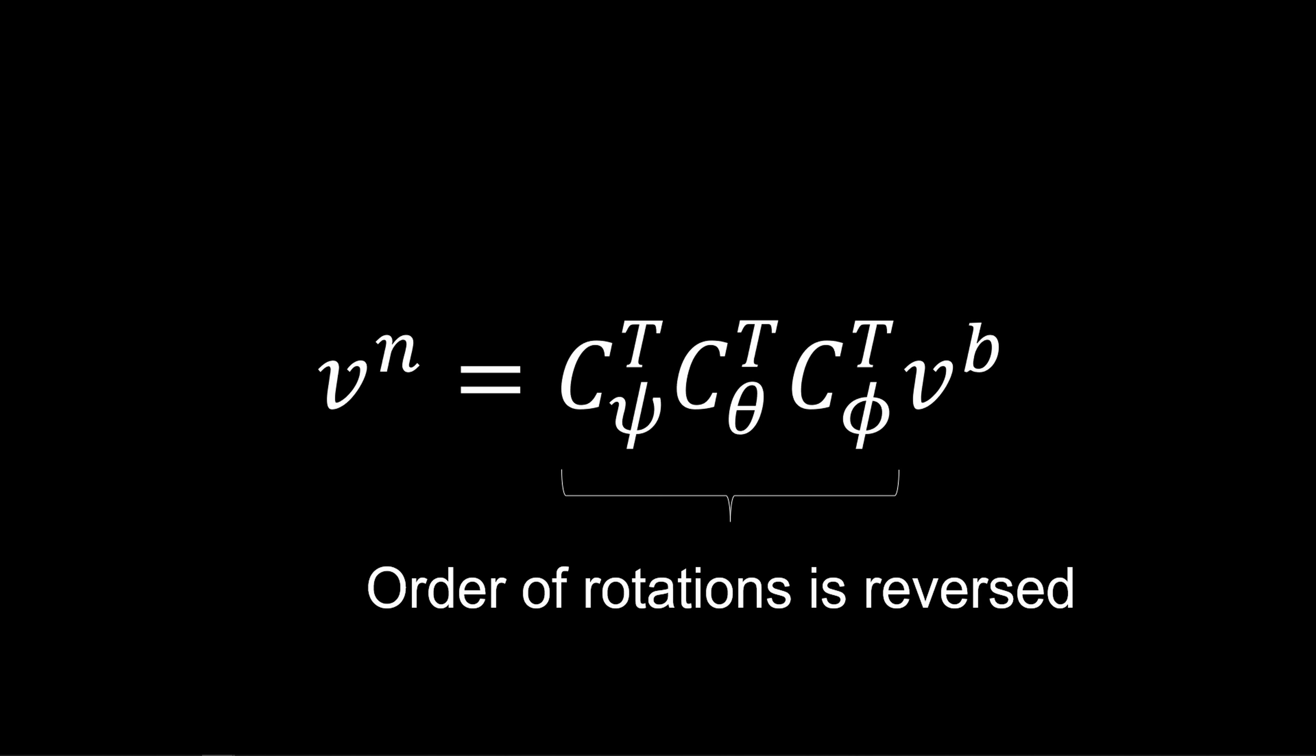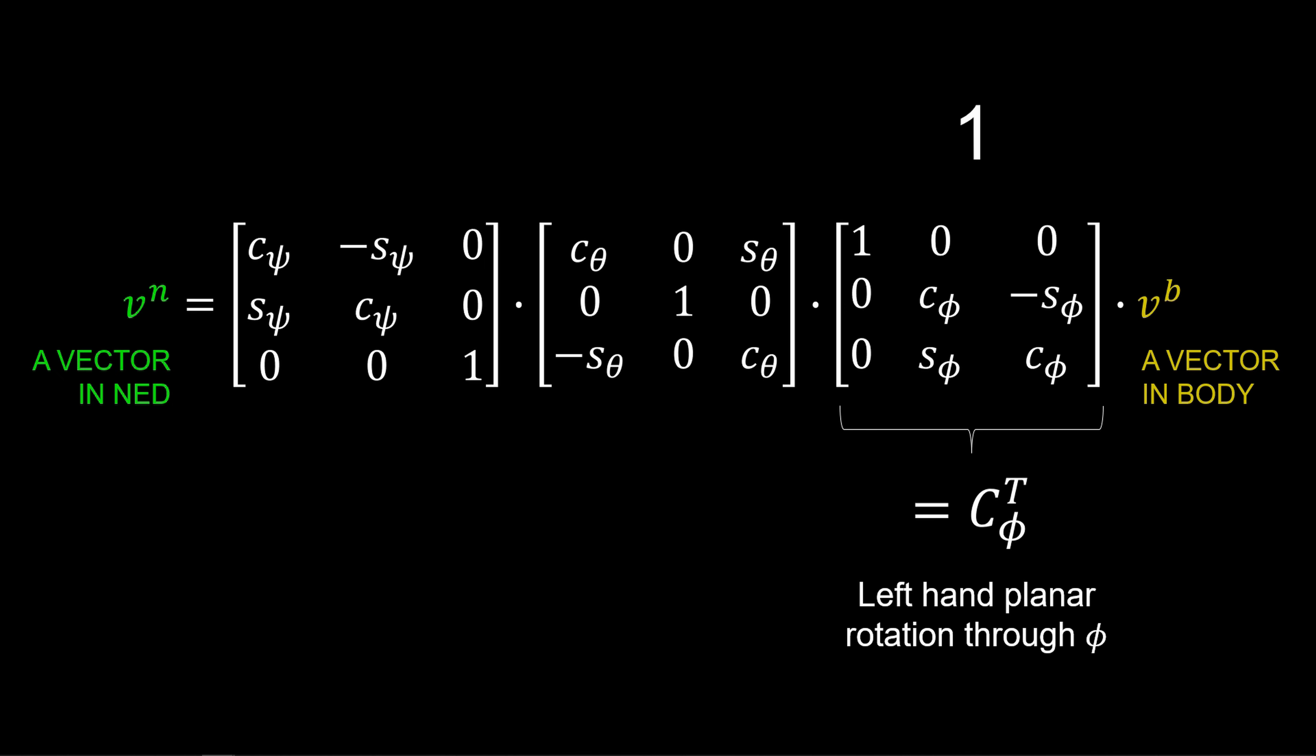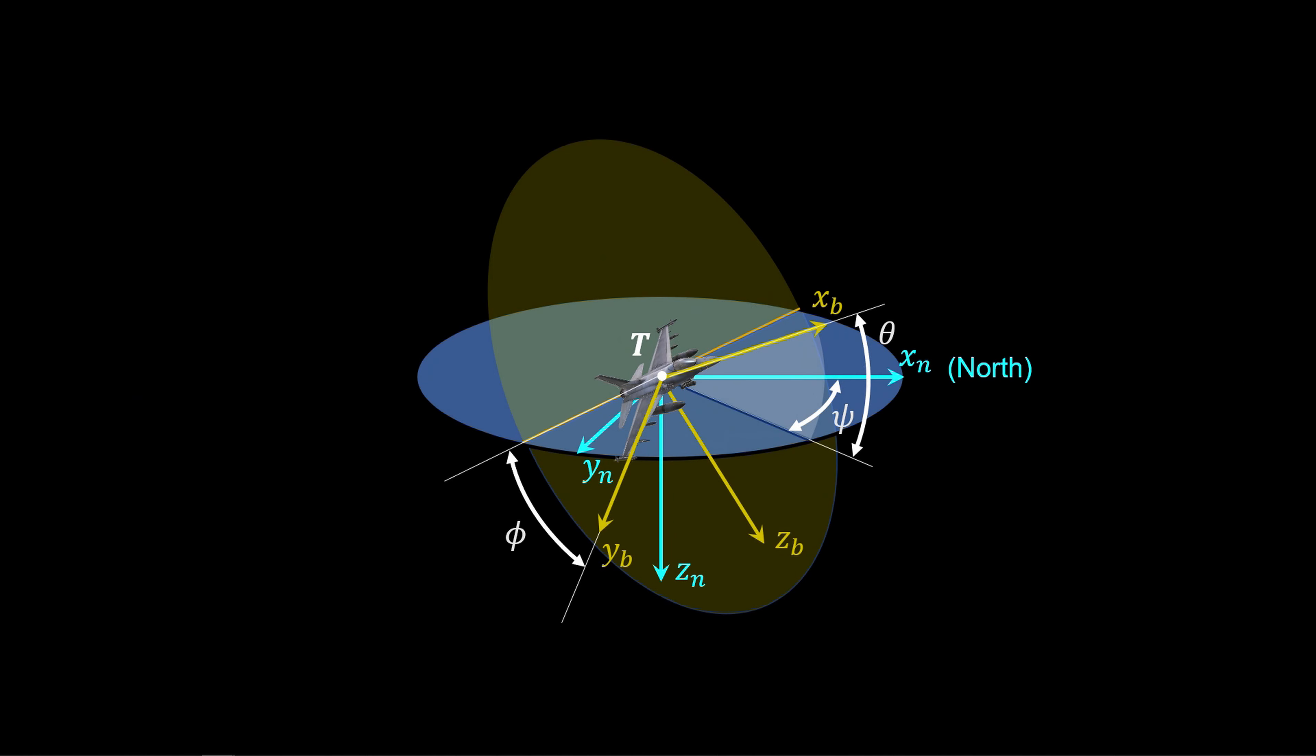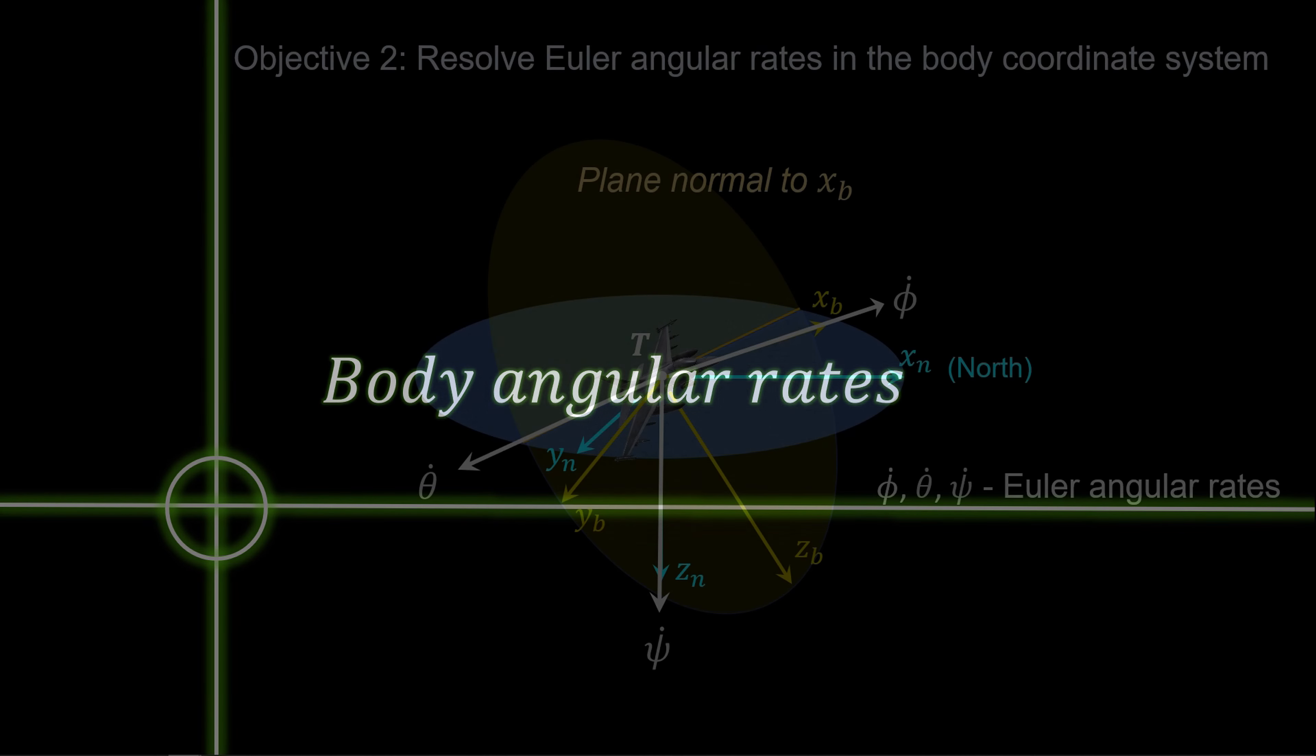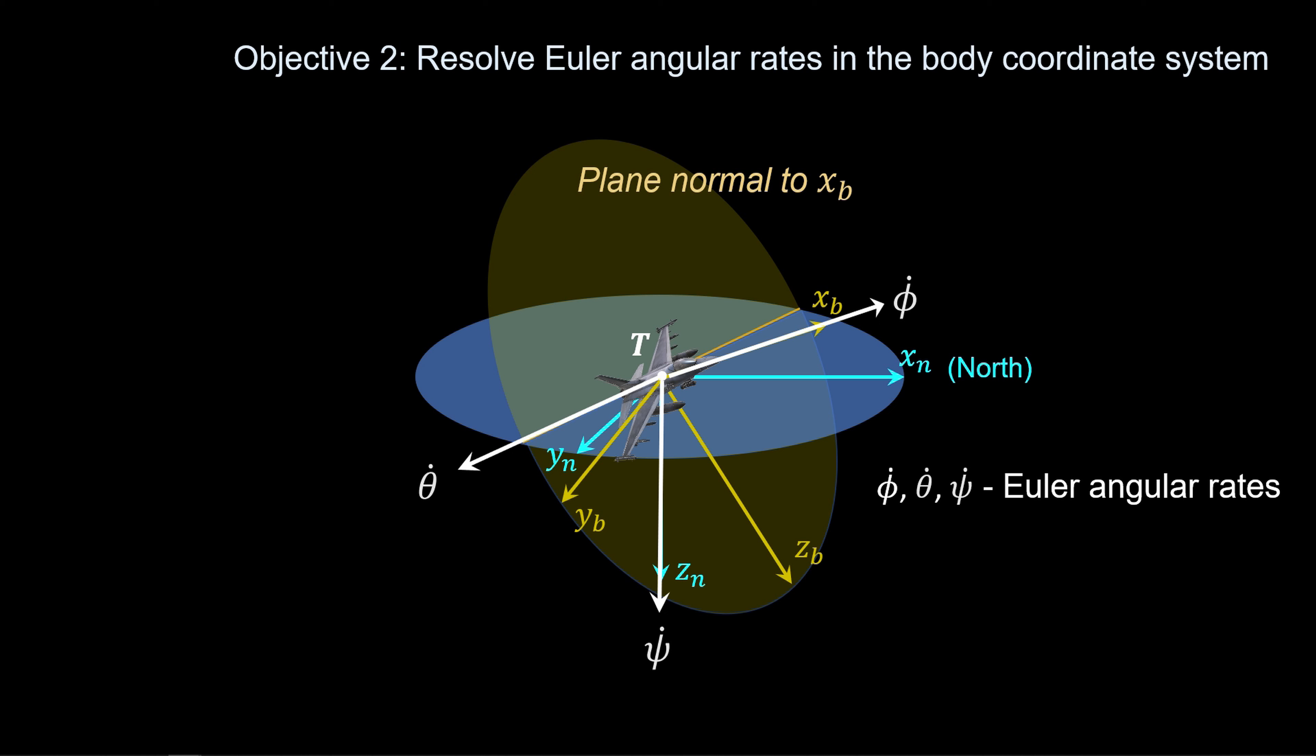First, note the transpose of the planar rotation is the inverse of the planar rotation, that is, the opposite direction of the rotation. This means that going from body to NED involves first a left-hand planar rotation through the roll angle, then a left-hand rotation through theta, and finally a left-hand rotation through psi.